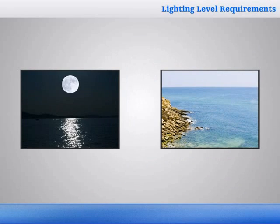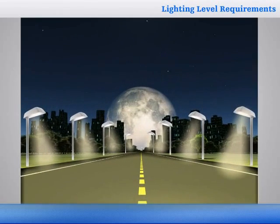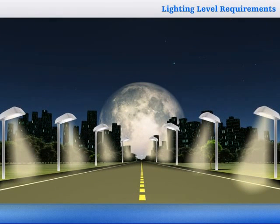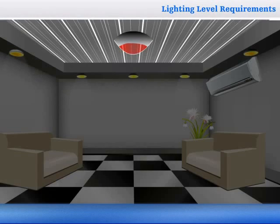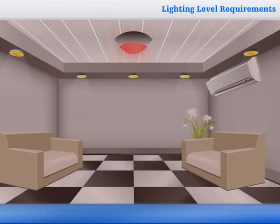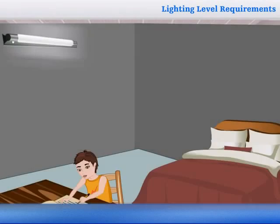The levels of lighting accepted as being satisfactory under artificial lighting are really very low: 3 to 25 lux for road lighting, 10 to 50 lux on average for mood lighting indoors, and 300 to 1,000 lux for reading and working.